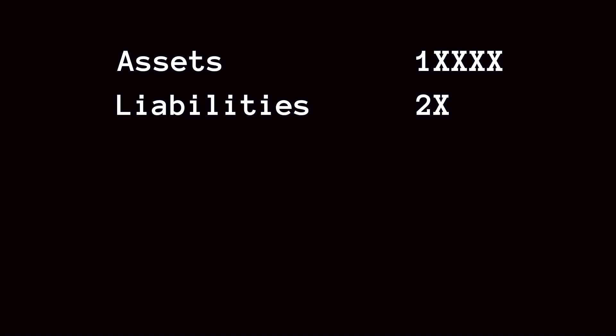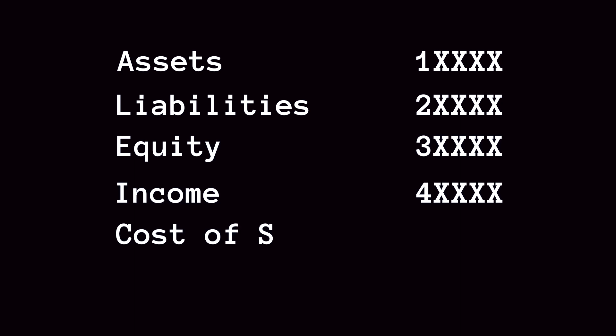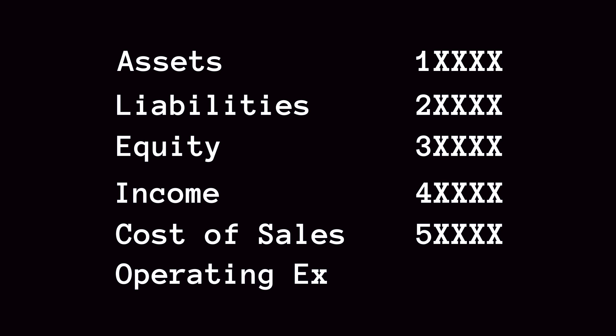Another important thing is the account number, which helps to organize the chart of accounts. There is an easy way to name and number the accounts. Basically, any asset account starts with 1, liabilities with 2, equity with 3, revenue with 4, cost of sales with 5, and operating expenses with 6. You can then choose the number of digits to create unique IDs for each of the accounts.